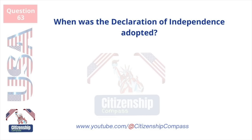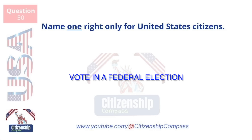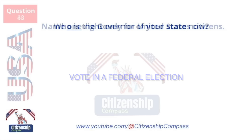When was the Declaration of Independence adopted? July 4, 1776. Name one right only for United States citizens. Vote in a federal election.